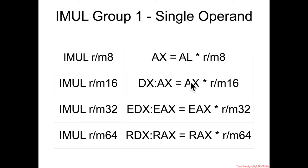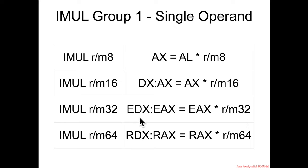The same basic structure continues: for a 16-bit value, you take the least significant 16 bits of RAX (AX) times the 16-bit value and store it into a 32-bit result — the concatenation of DX for most significant bits and AX for least significant. The 32-bit form stores into EDX:EAX as a 64-bit output, and the 64-bit form stores into a 128-bit output.